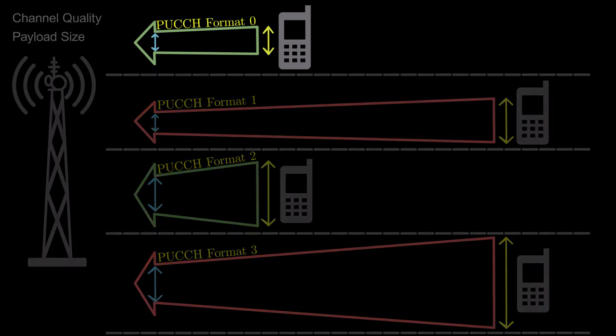In PUCCH format 0, PUCCH is allocated over 1 PRB in frequency domain and 1 or 2 symbols in time domain.